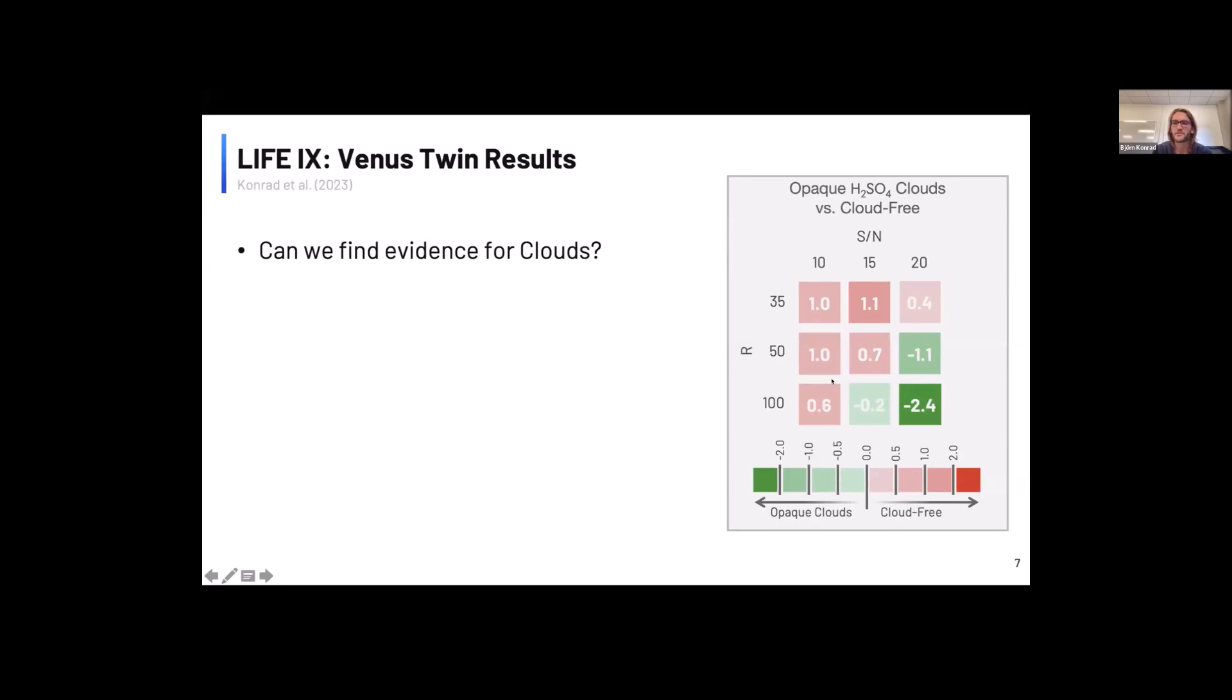Basically, red fields mean that the cloud-free model fits the result better, whereas green fields indicate that the cloudy model fits the result better. And what we see here is that for the low resolution and low signal-to-noise cases, so basically the upper left of this square, the cloud-free model is better. And these are also the cases where the cloud-free model yields the better radius estimate.